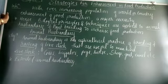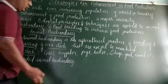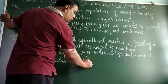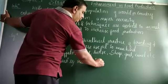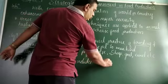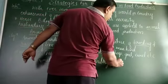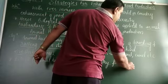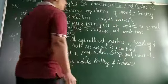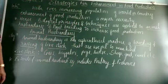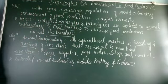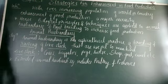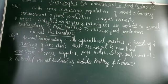Extended animal husbandry also includes poultry and fisheries. From poultry, we get egg and meat products. Fisheries refers to the meat products obtained from fish.